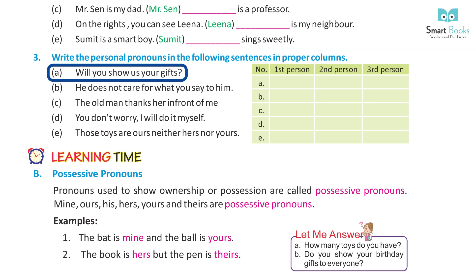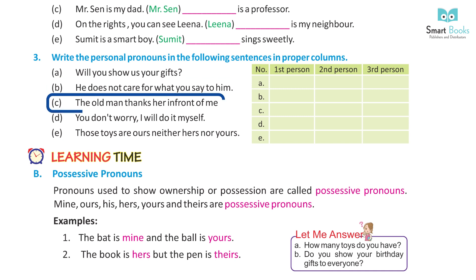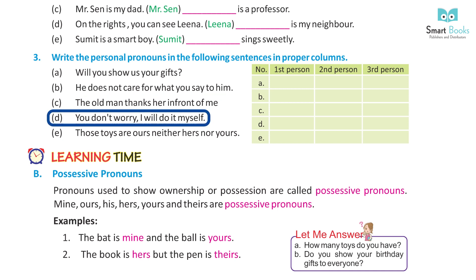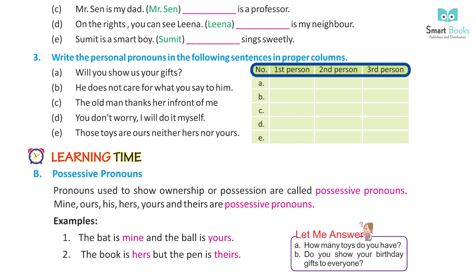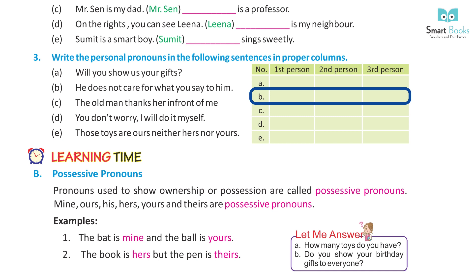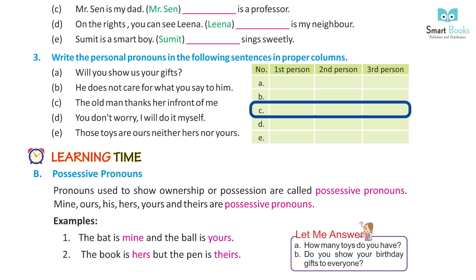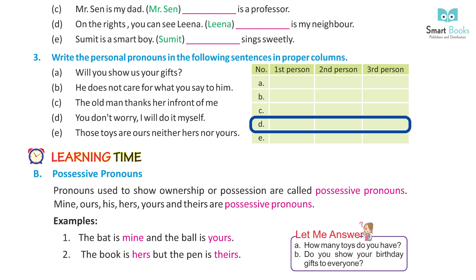Write the personal pronoun in the following sentences in the proper column. A: Will you show us your gift? B: He does not care for what you say to him. C: The old man thanks her in front of me. D: You don't worry, I will do it myself. E: These toys are ours, neither hers nor yours. Answers — A: first person: us; second person: you, your. B: second person: you; third person: he, him. C: first person: me; third person: her. D: first person: I, myself; second person: you. E: first person: ours; second person: yours; third person: hers.